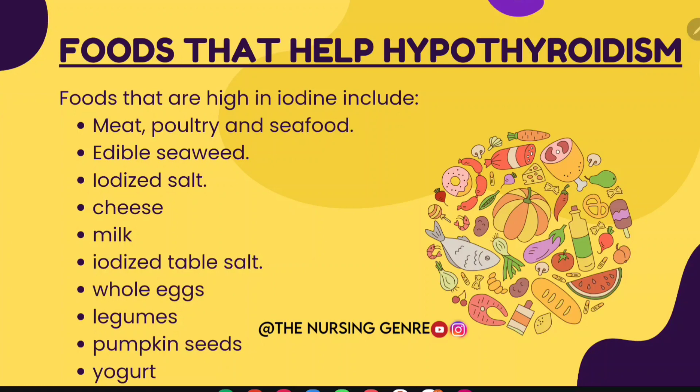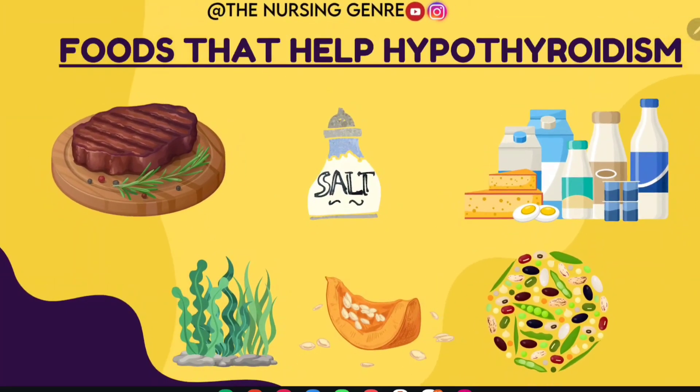Additional foods for hypothyroidism include iodized table salt, whole eggs, legumes, pumpkin seeds, yogurt, meat, dairy, seaweed, and vitamin-rich foods.